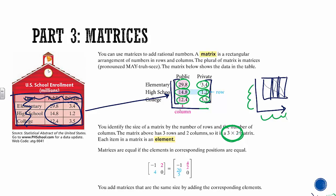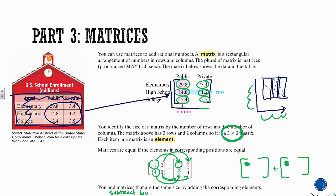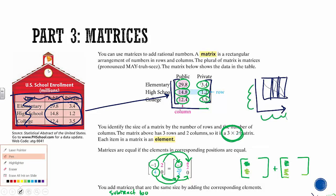Matrices are equal if the elements in corresponding positions are equal. So if two matrices are set equal: negative 1 equals negative 1, 4 equals 2/5, 0 equals 0, and 2 equals 4/2. To add or subtract matrices, they must be the same size — you cannot add two matrices that are not the same size. You just add the corresponding elements — the two things in the same position.